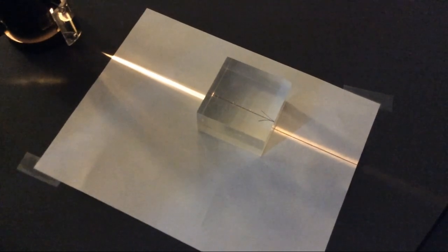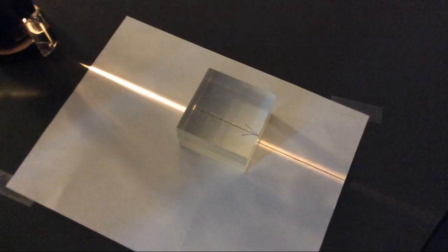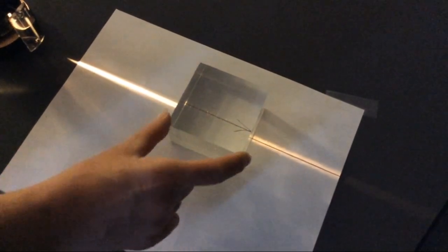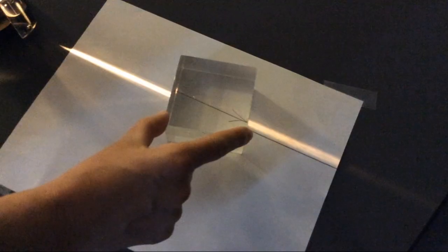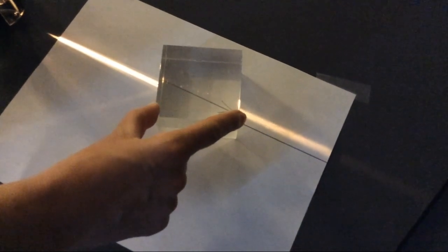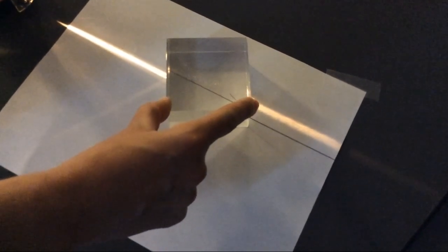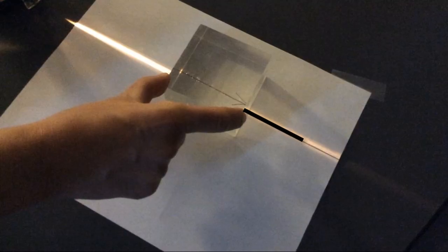Now, what we want to do is to understand what happens when we are going to tilt it a little bit. So, I'm going to start tilting it. And I want you to pay attention to the light ray, how it was before. Once again, that's how it was before.